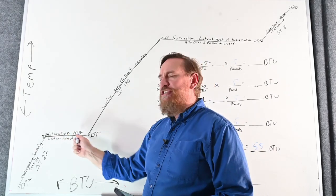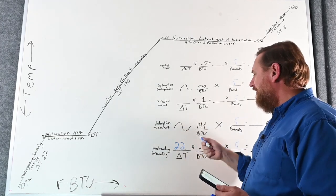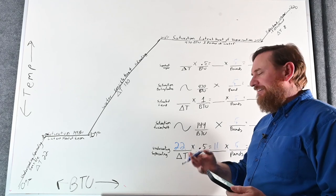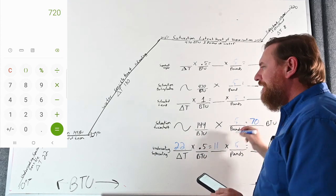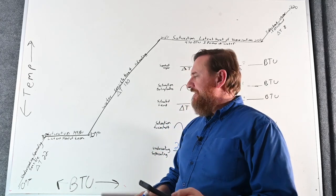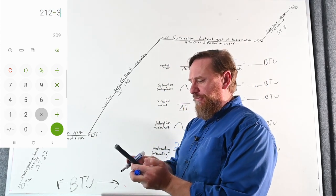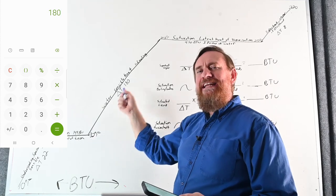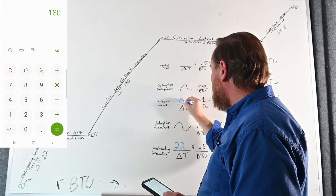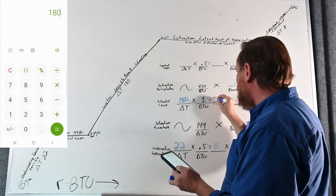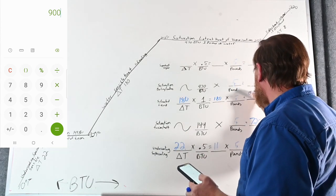The next step is the change of state from 32°F solid to 32°F liquid. There's no delta T because it's the same temperature — it's already given as 144 BTUs. So 144 times five pounds gives us 720 BTUs just in that change of state. Next is the sensible heat of water: 212 minus 32 gives us a 180°F delta T. That's 180 times one BTU times five pounds, giving us 900 BTUs.